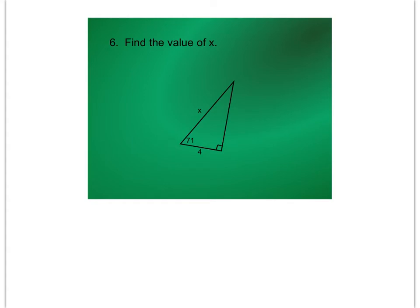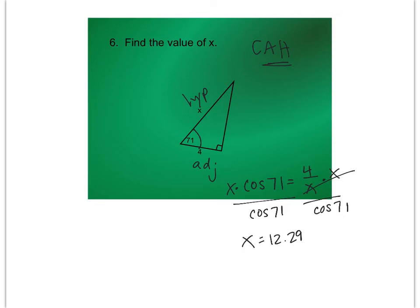For number six, I started by looking at the angle, 71. 4 is adjacent, X is hypotenuse. If you think about SOH CAH TOA, adjacent and hypotenuse go with CA, which stands for cosine. So I did cosine 71 equals 4 over X. Multiply by whatever's on the bottom, and then divide by cosine 71. X equals 4 divided by cosine 71, which is 12.29. There is no label, so we do not have to worry about labeling.